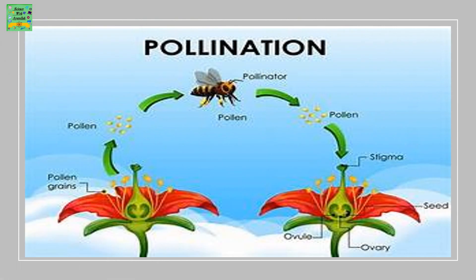This diagram shows the process of pollination. At first, a pollinator — that may be a bee — takes the pollen grains from the anther of a flower to the stigma of the same flower or a different flower of the same kind.